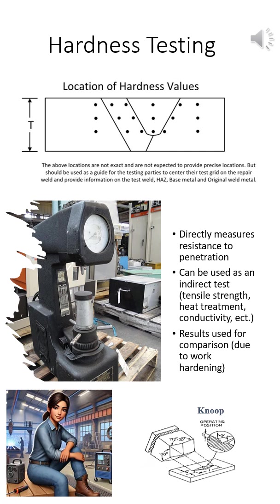Hardness basics. Hardness is the ability of a material to resist indentation or localized deformation. It's commonly tested using non-destructive methods, primarily in laboratories rather than in the field. Hardness testing is a crucial tool for quality control, ensuring that materials meet specific strength and durability requirements.